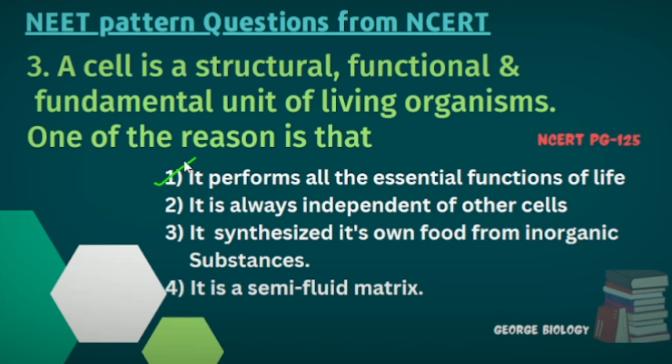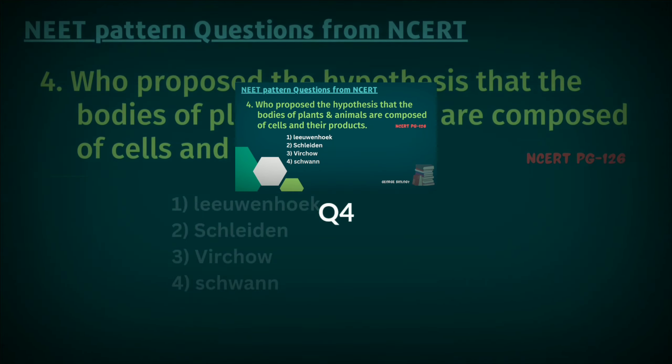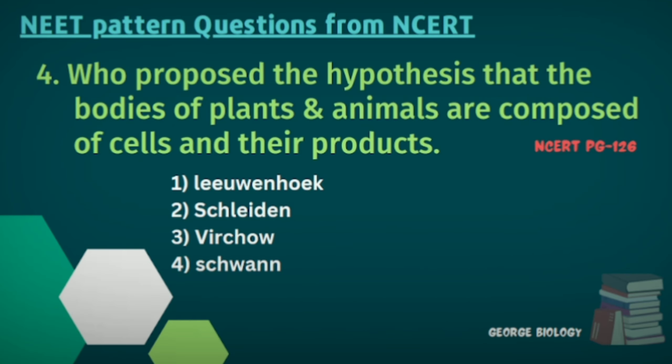Number four: Who proposed the hypothesis that the bodies of plants and animals are composed of cells and their products? Options: Leeuwenhoek, Schleiden, Virchow, Schwann. The answer is the fourth option — Schwann.